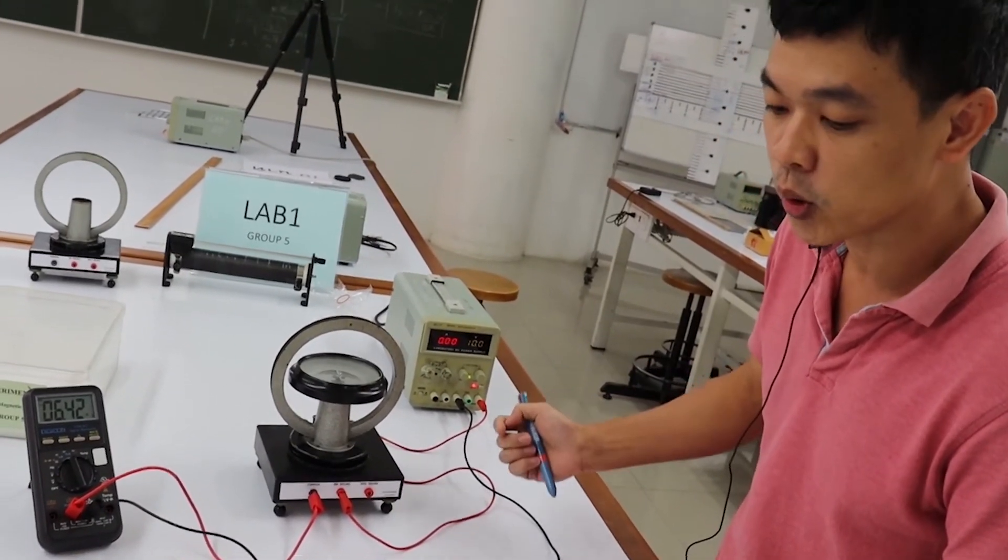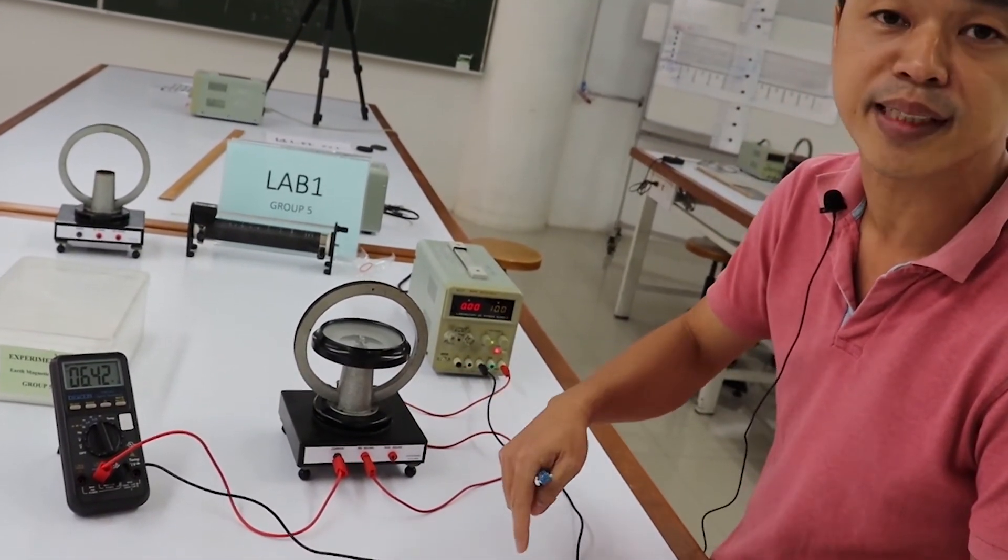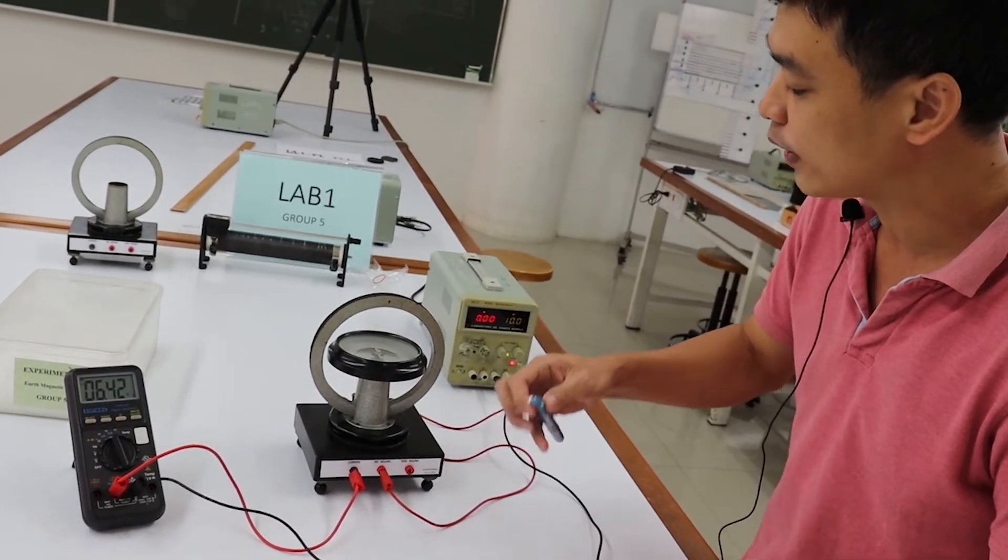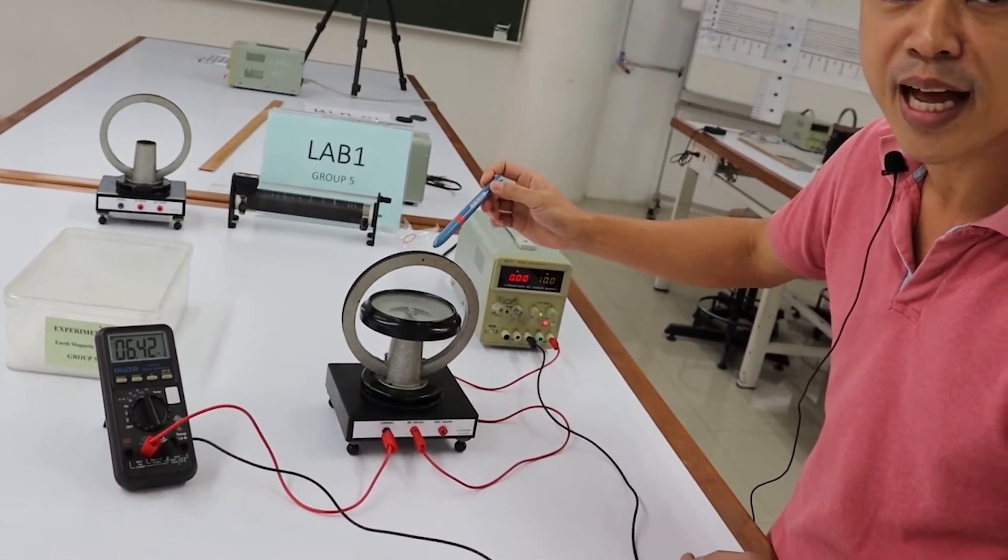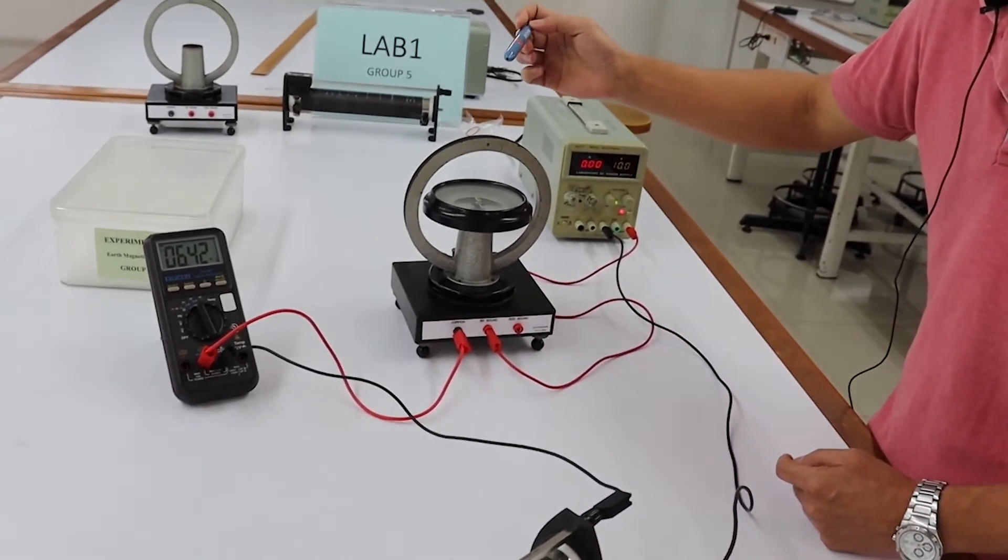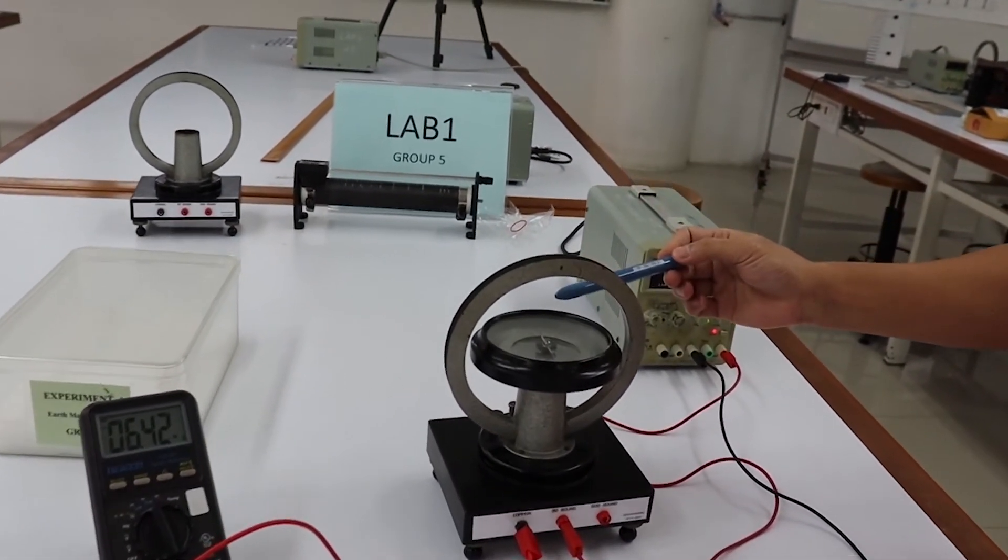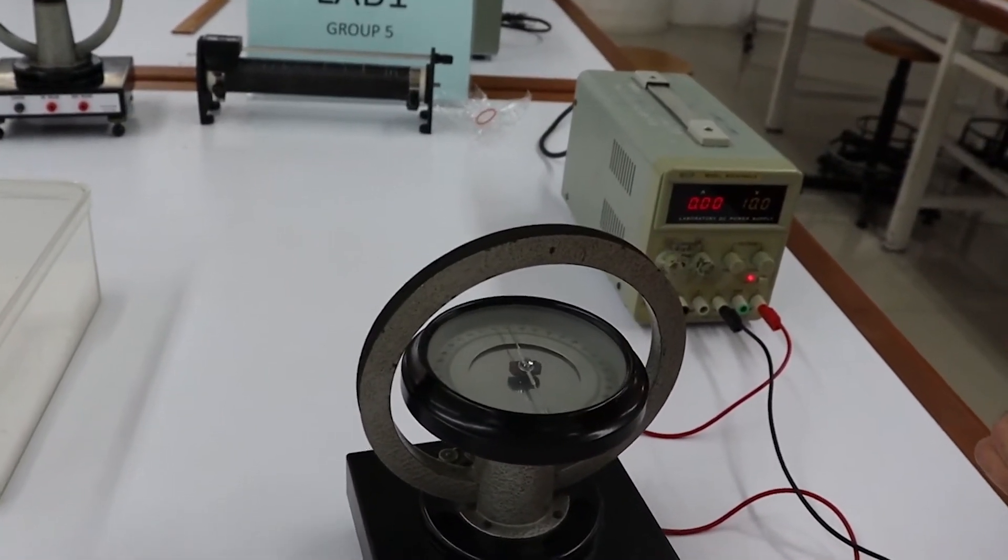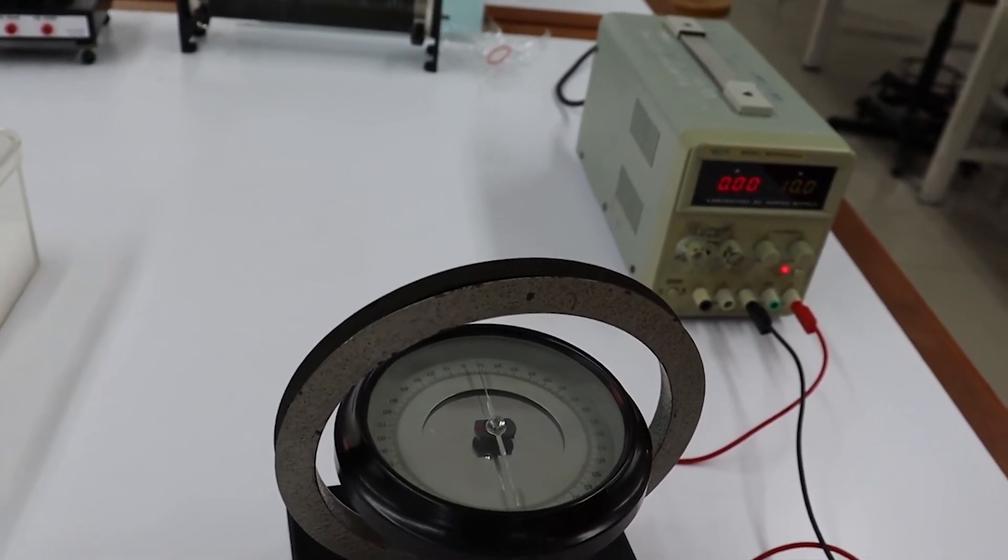After we turn the power supply on and there are current in the circuit, the tangent galvanometer will produce the magnetic field. So there are both the magnetic field from the coil and the Earth. The needle will point to the resultant magnetic field.